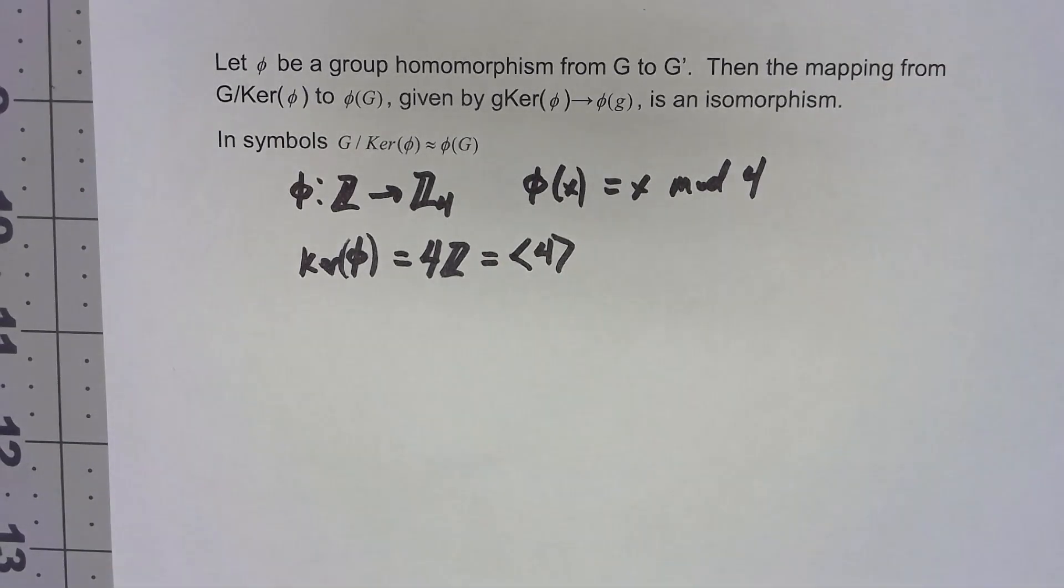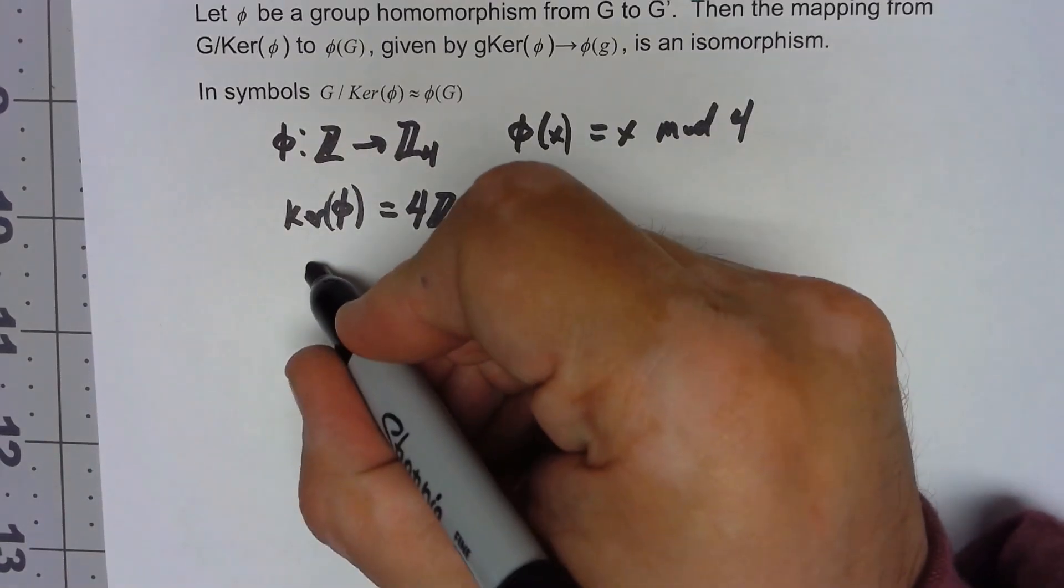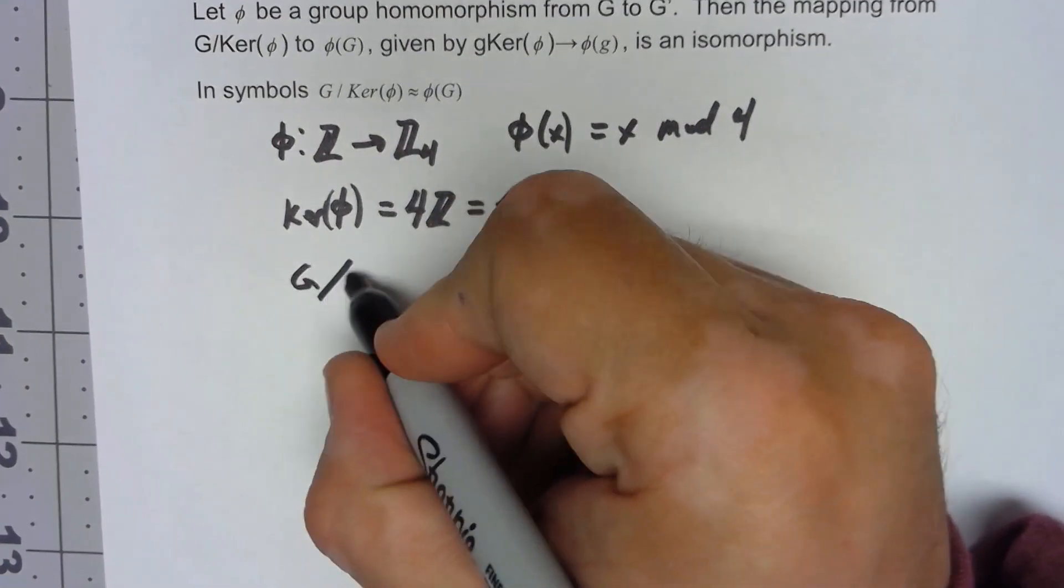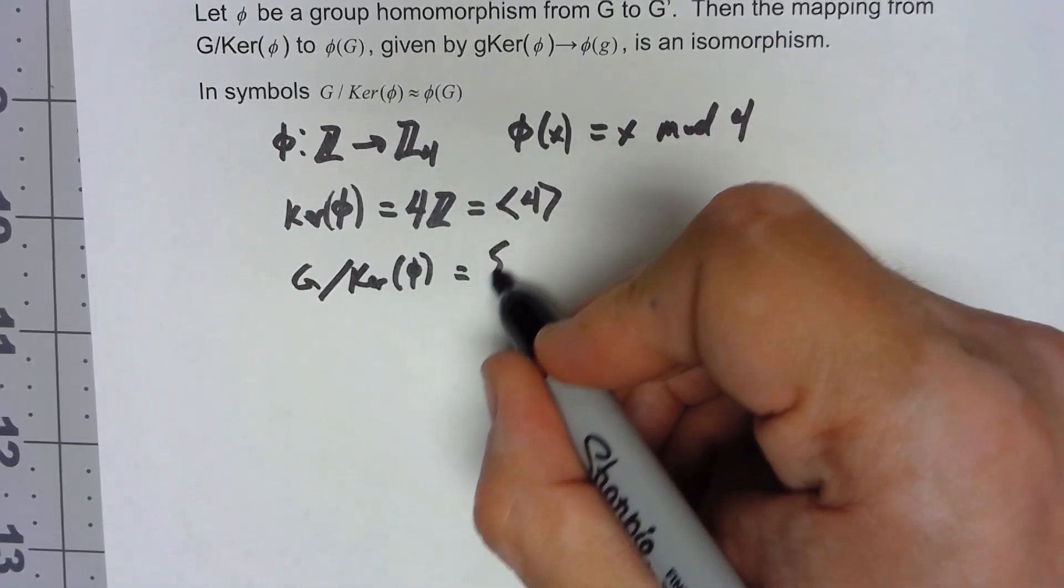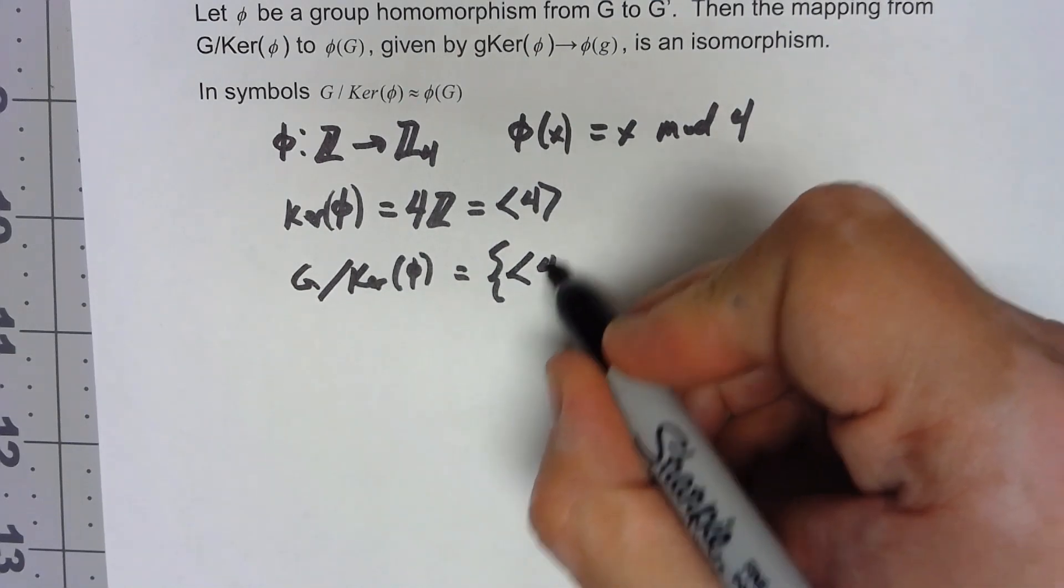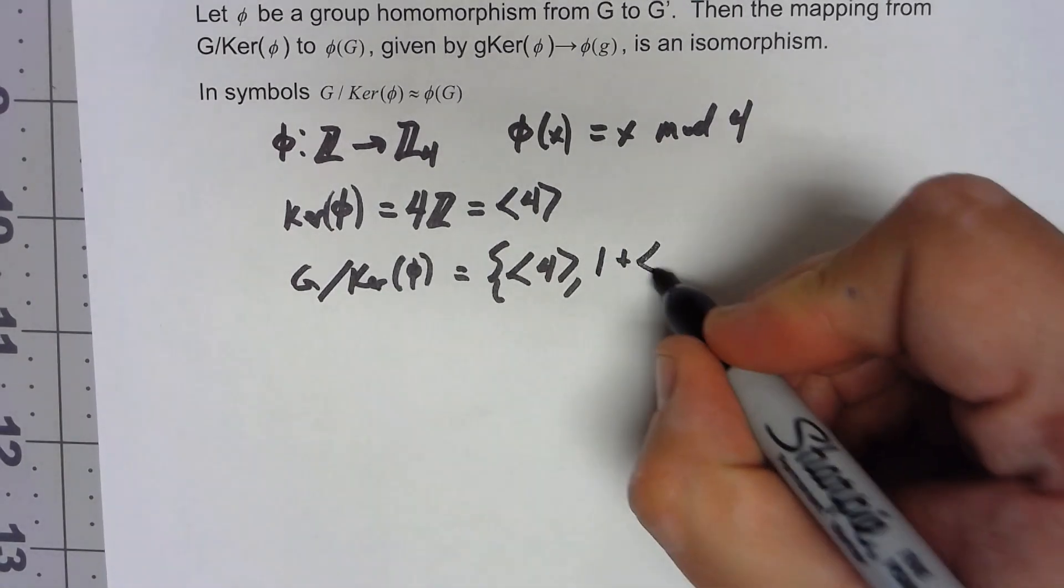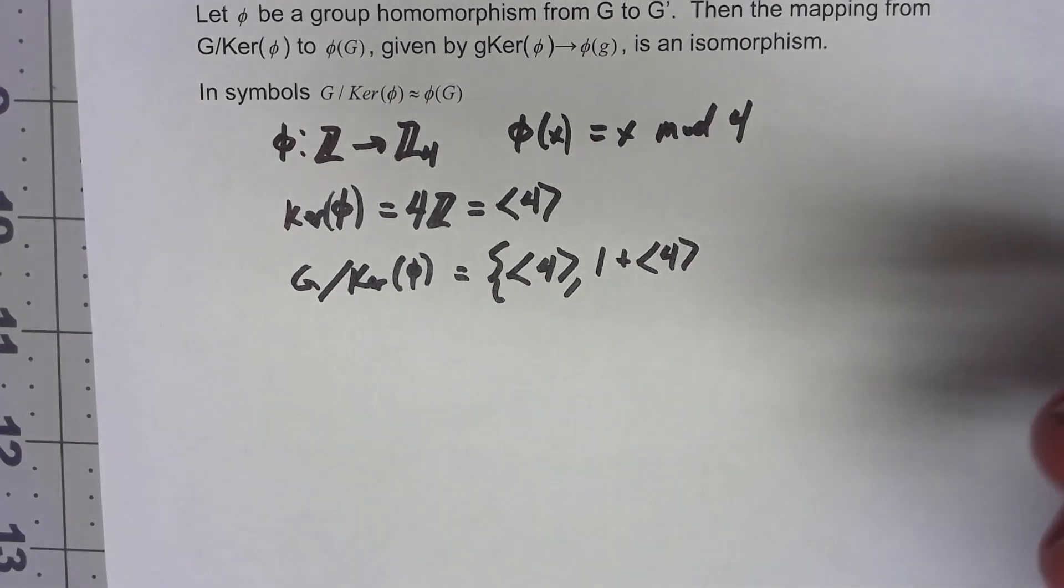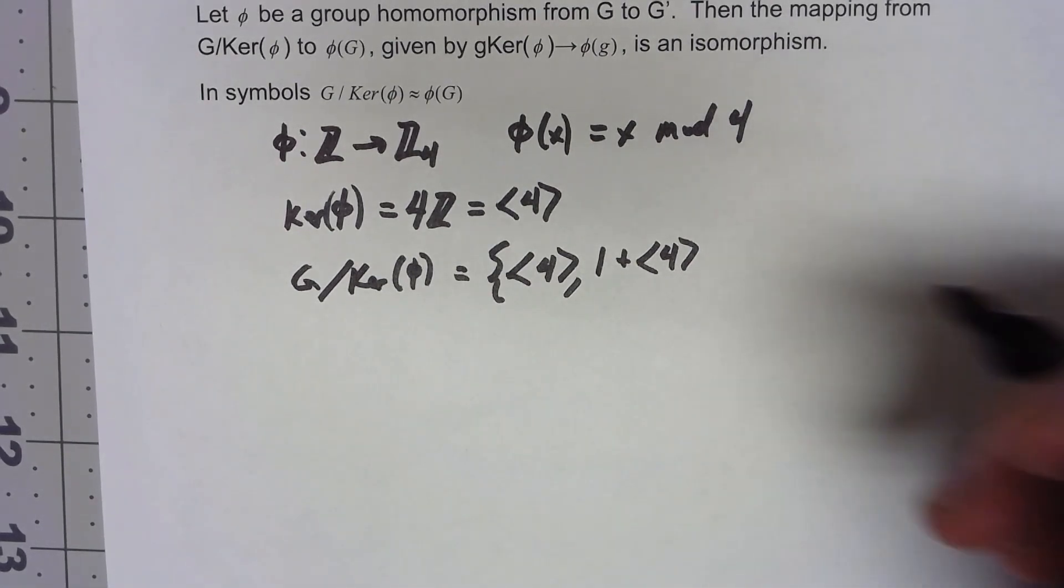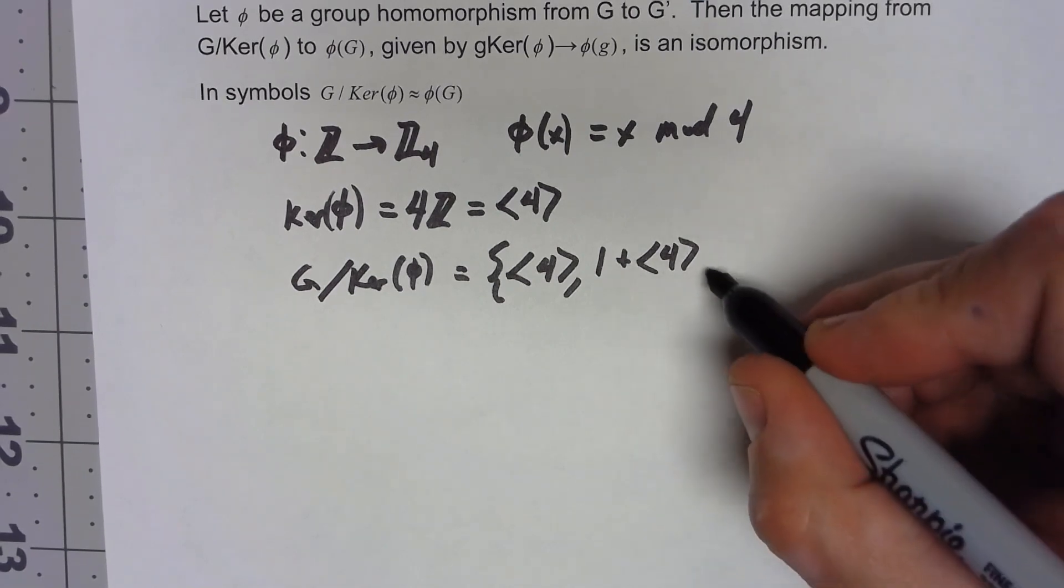Okay, so let's think about this. What then, if that's my kernel, what is the factor group G mod my kernel of phi? Well, we're going to get that group. We're going to get 1 plus 4 so that would have 1, 5, 9, 13, so on like that. In addition to negative 3, negative 7, negative 11, and so on like that.